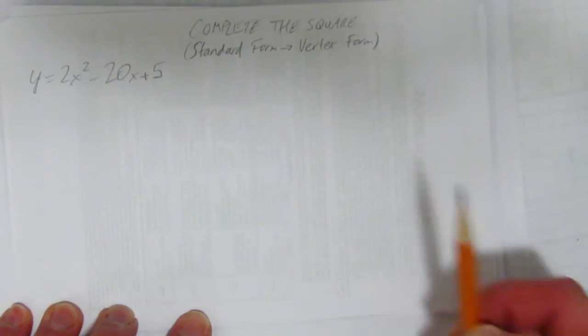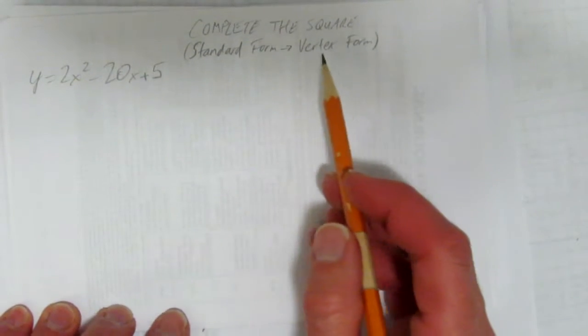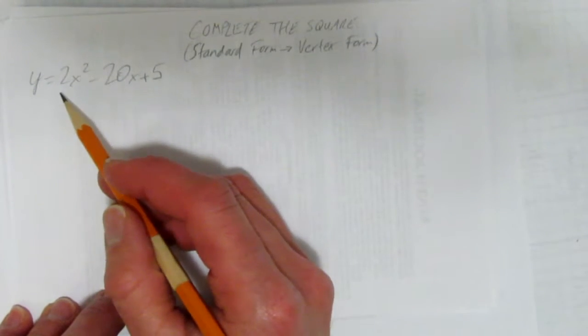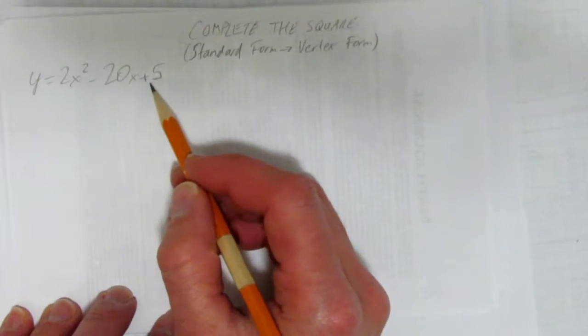In this video, we'll look at how to complete the square. What complete the square does is change a standard form equation into a vertex form equation. Let's begin. I have an equation here, y equals 2x squared minus 20x plus 5.